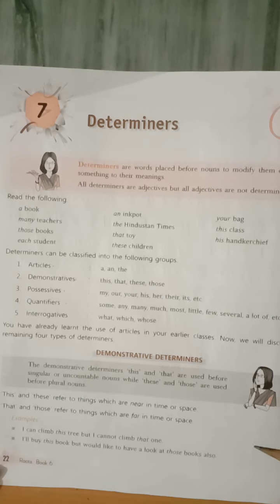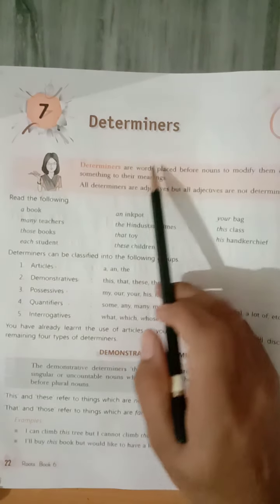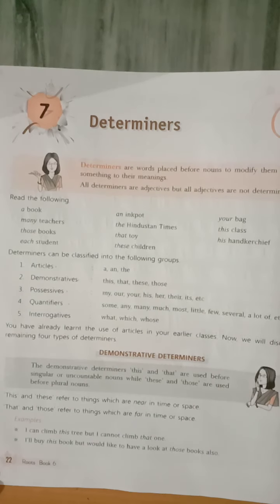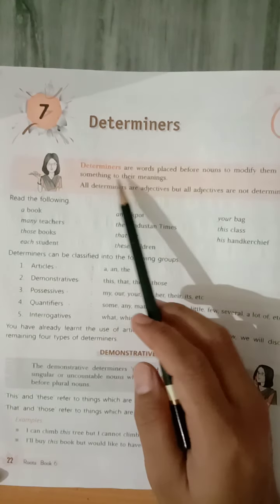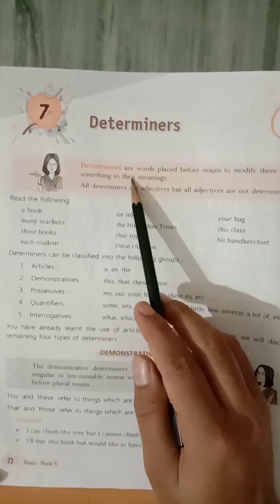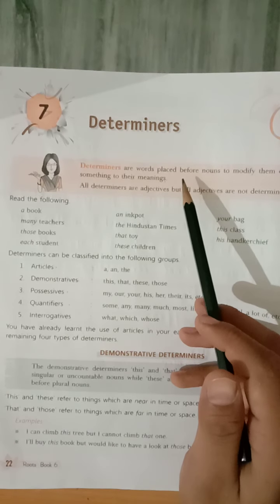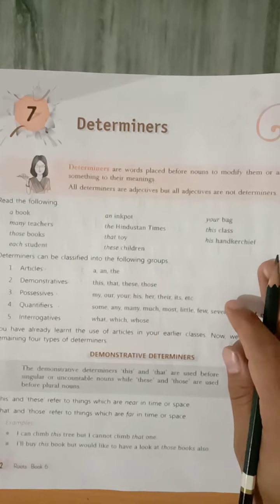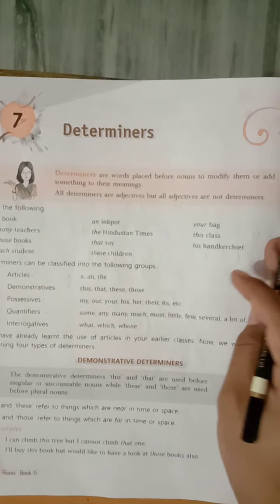In class 6th today we are going to start English grammar subject. In chapter number 7 we are going to study determiners — what they are, and in how many types they are classified. The definition of determiners is: determiners are words placed before a noun to modify them or add something to their meaning.